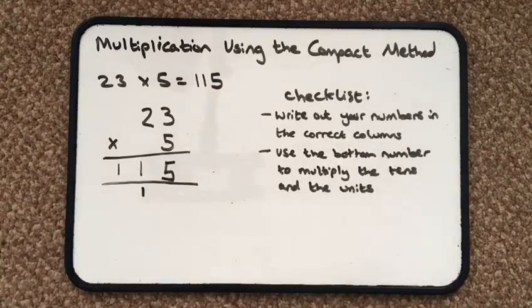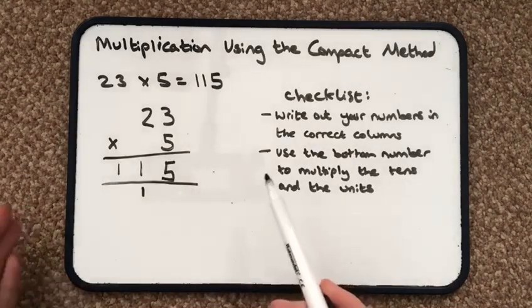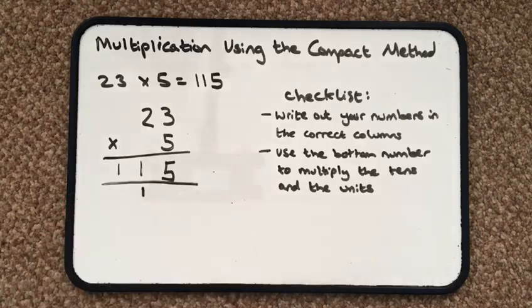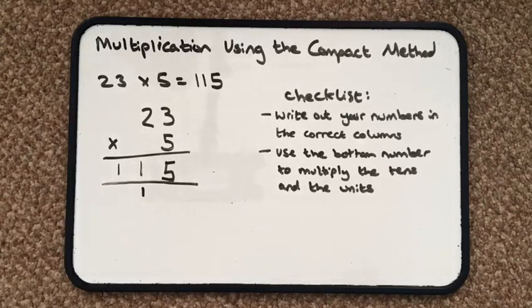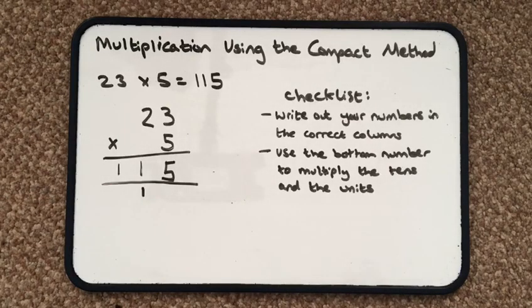So I've done exactly the same as I did in the expanded method, but I've just added as I've gone along, rather than in the expanded version, where you add and combine at the end, and you get the same answer. So that is using the compact method.